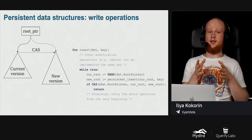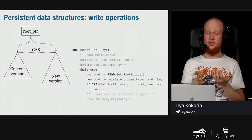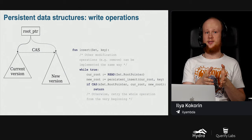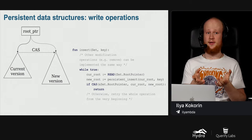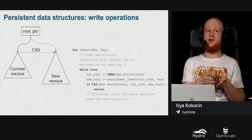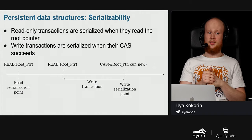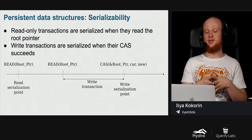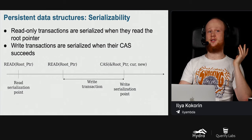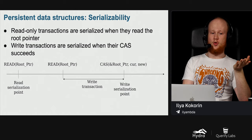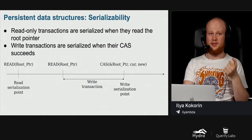Write queries are a bit more complex. First, we acquire the current version by reading the root pointer. After that, we obtain the new version by applying the modification operation. Then we use compare-and-swap (CAS) to try to atomically replace the current version with the new one. If CAS succeeds, we have successfully applied our modification. If it fails, it means some other transaction changed the version, and we must retry from the beginning. This approach is called universal construction and guarantees serializability. Neither readers block writers nor writers block readers.